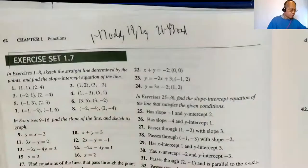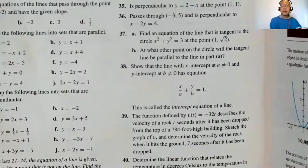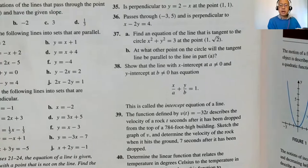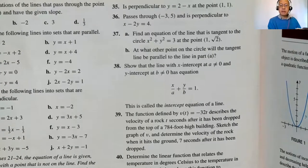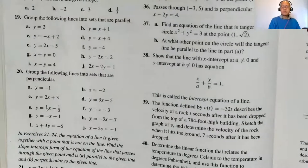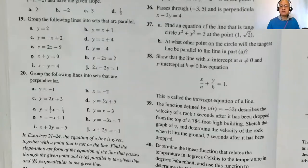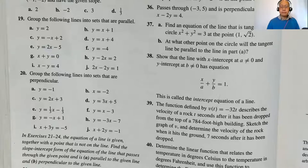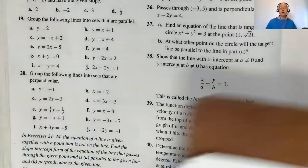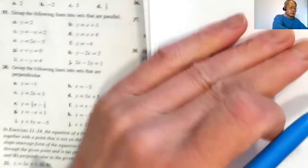That's an introduction to section 1.8; I'll begin doing problems from it tomorrow. There was also a question from 1.7, problem 37. The problem asks: find the equation of the line tangent to the circle x² + y² = 3 at the point (1, √2). The student mentioned they tried taking two points from the circle to find the slope but weren't sure it was truly tangent.